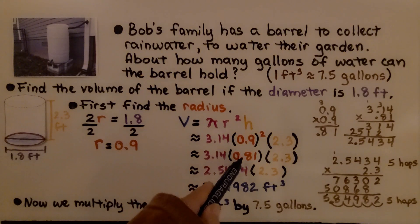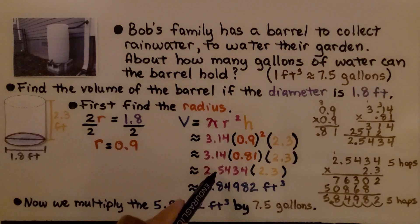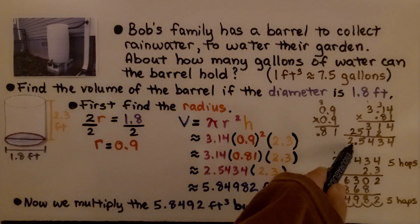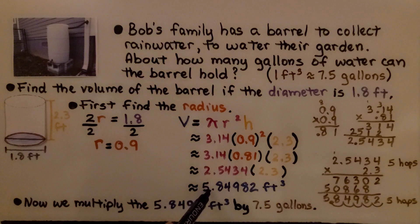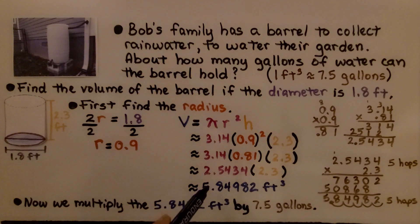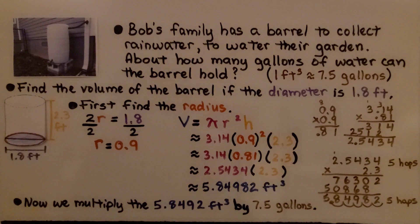0.9 squared is 0.81. We multiply 3.14 times 0.81 and get 2.5434. We multiply that by the height and get approximately 5.8498 cubic feet. That's the cubic feet the barrel can hold. Now we use the conversion information given: we multiply 5.8492 cubic feet by 7.5 gallons per cubic foot.